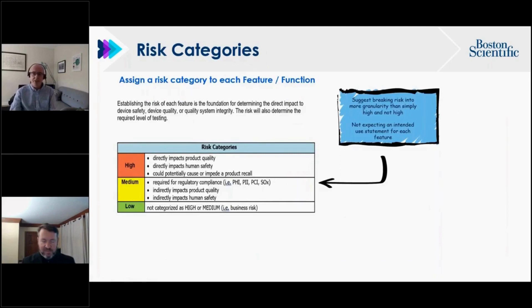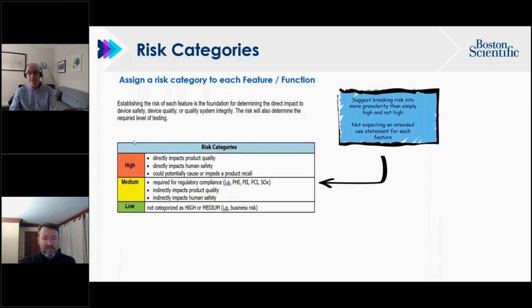The guidance classifies risk into two distinct groups — high and not high — and introduces the concept of software quality: software that either directly or indirectly impacts product quality and ultimately patient safety. At Boston Scientific, they've broken risk categories into three levels — high, medium, and low — for more granularity when classifying features. They do not create an intended use statement for each individual feature; that is kept at the system level, and a risk category is assigned to each feature.